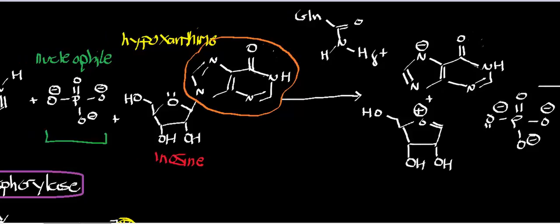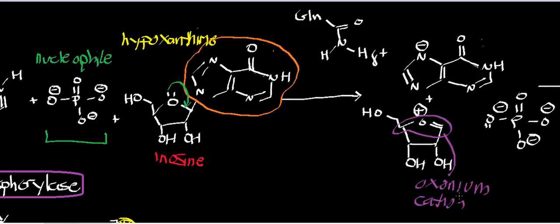In this step, we're going to get something called a carbon-nitrogen heterolysis reaction. This is one of the mechanistic steps in purine nucleoside phosphorylase. What's going to happen is a lone pair on the oxygen of the ribofuranose ring is going to kick in here to form an oxonium cation. This functional group right here, this is called an oxonium cation. It's very unstable, and so it likes to react with nucleophiles.